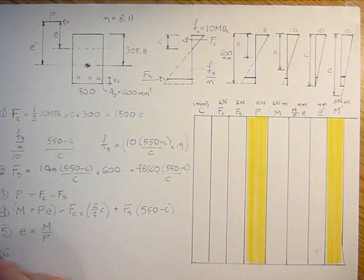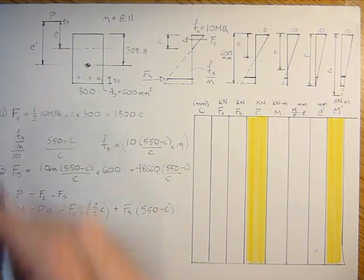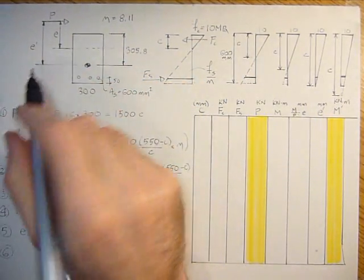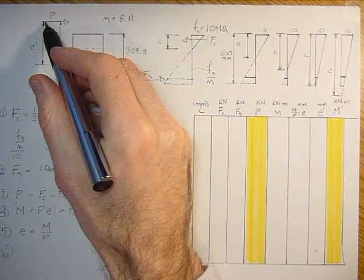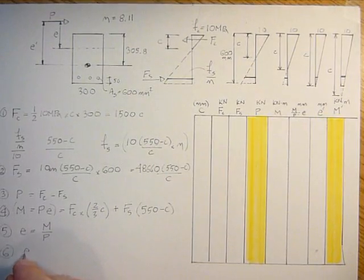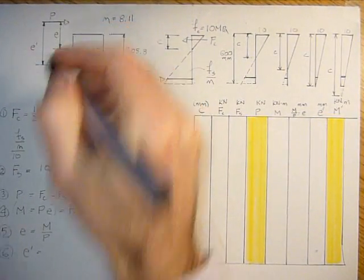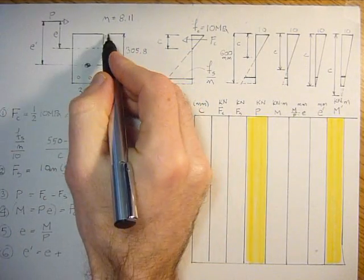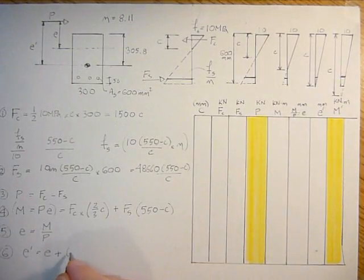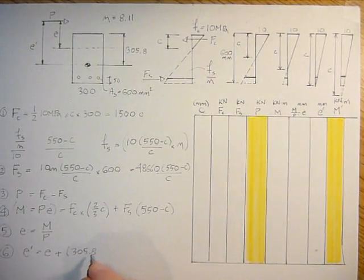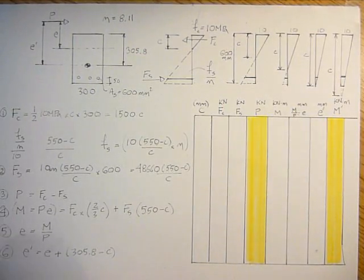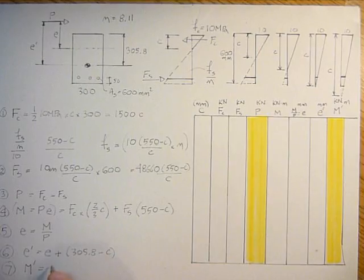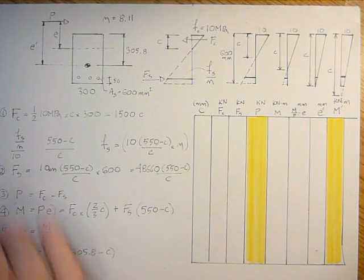And then finally, the most important is to transform the eccentricity from this axis down to this axis. It's pretty easy to do because we know that the distance from here to here, we're calling it E prime. And that's going to be equal to this E distance plus 305.8 minus C. We're going to want to plot M prime relative to E prime. M prime is just going to be the axial load, P times E prime. So now we've developed all the equations.